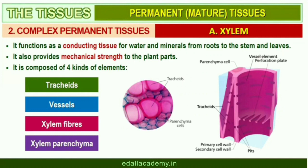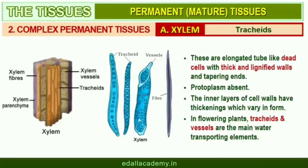Xylem is composed of four different kinds of elements: tracheids, vessels, xylem fibers, and xylem parenchyma. Gymnosperms lack vessels in their xylem. Tracheids are elongated or tube-like cells with thick and lignified walls and tapering ends. These are dead and are without protoplasm. The inner layers of the cell walls have thickenings which vary in form. In flowering plants, tracheids and vessels are the main water-transporting elements.